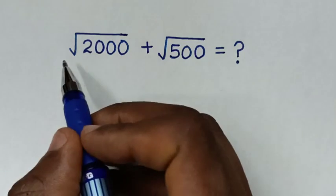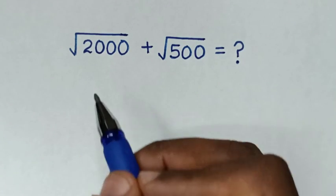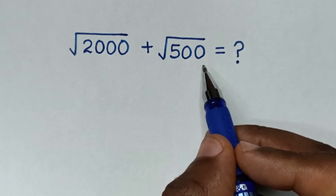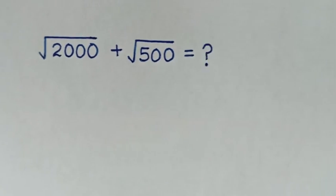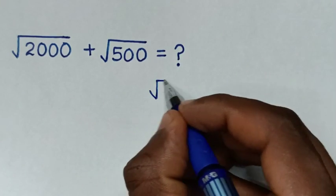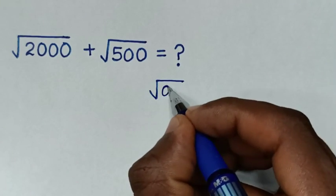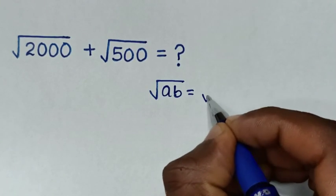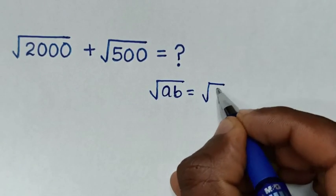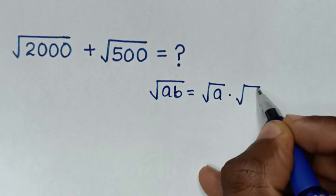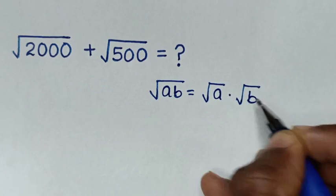Hello! How to solve square root of 2000 plus square root of 500? We'll apply the rule that square root of AB is equal to square root of A times square root of B.